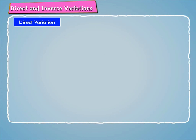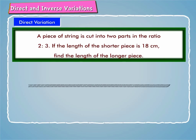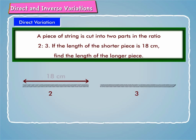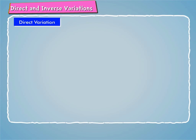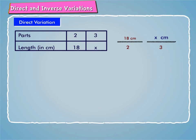Now, by using direct variation rule, let us discuss an example. A piece of string is cut into two parts in the ratio 2 is to 3. If the length of the shorter piece is 18 cm, find the length of the longer piece. Suppose the longer piece measures x cm. We write the given information in the table as shown on screen.